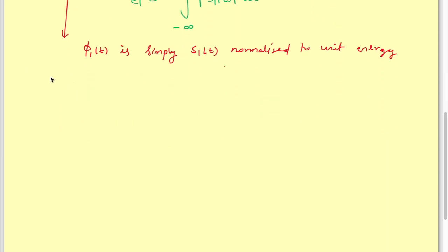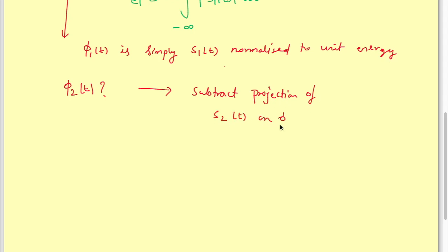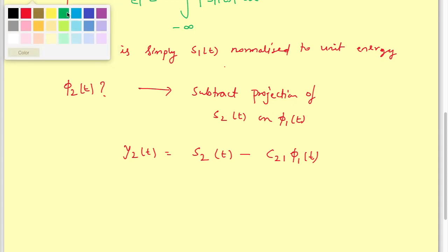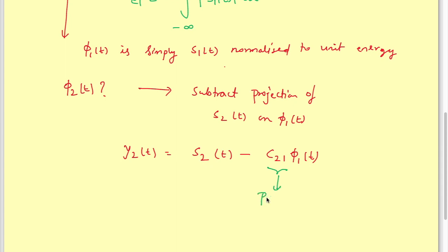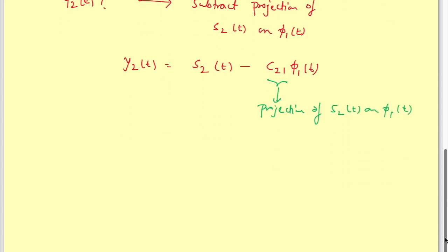Now we need to find phi_2(t). There are some steps: first we subtract the projection of s2(t) onto phi_1(t). We find gamma_2(t) = s2(t) minus c21 times phi_1(t), where c21 is the projection of s2(t) onto phi_1(t), computed as the inner product of s2(t) and phi_1(t).